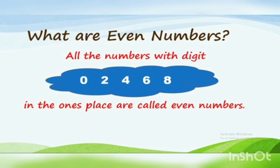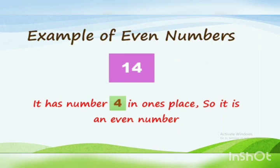We will start with even numbers. All the numbers with digit 0, 2, 4, 6, and 8 in the ones place are called even numbers. Or we can say the numbers which are divisible by 2 are called even numbers. Let us see an example. Let us take number 14 — it has number 4 in one's place, so it is an even number.